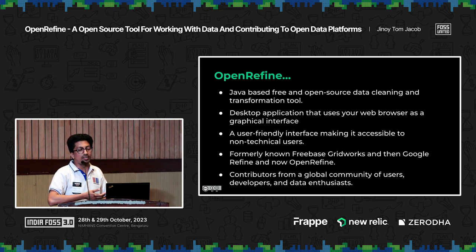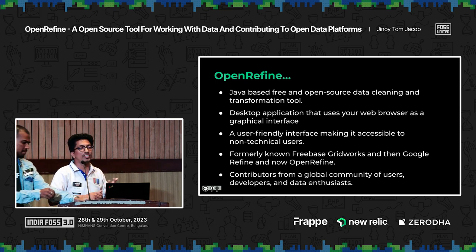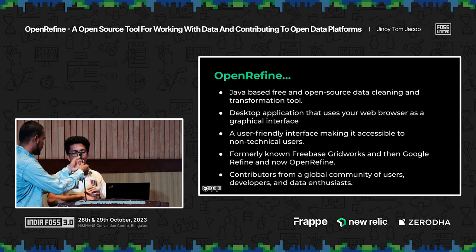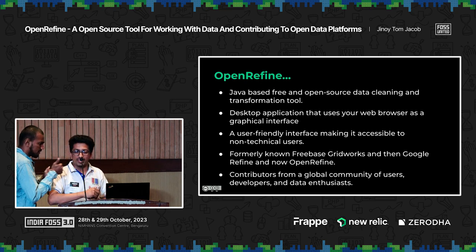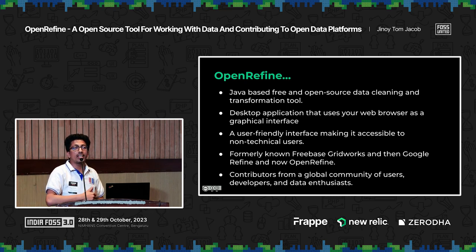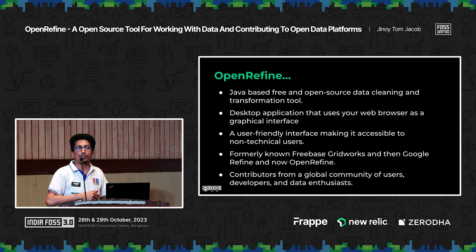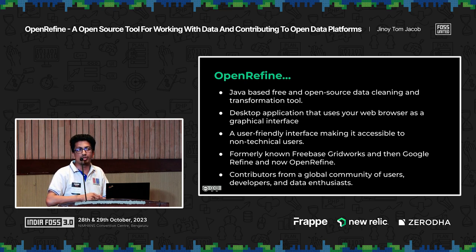Unlike tools that stop getting updates, OpenRefine gets regular updates — every month you'll get updates. If you encounter bugs while using the tool, you can report them on the OpenRefine platform on GitHub, or there is a community portal and a Telegram group where you can chat with other people who use the tool.